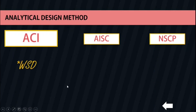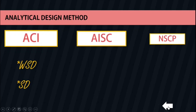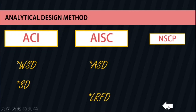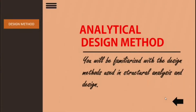The last topic for this chapter is the analytical design method. Here we have the ACI, which is the American Concrete Institute. Under it we have WSD and SD, where WSD stands for Working Stress Design and SD for Strength Design — considered when designing concrete. The second one is the AISC, the American Institute of Steel Construction. Under it we have ASD, meaning Allowable Strength Design, and LRFD, meaning Load and Resistance Factor Design, used when designing steel. The most common code used in the Philippines is the NSCP, which stands for the National Structural Code of the Philippines.